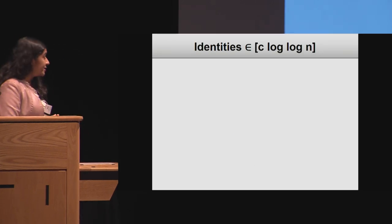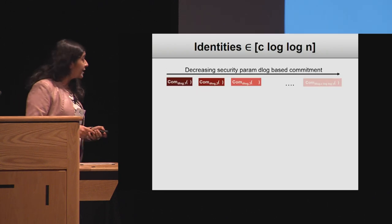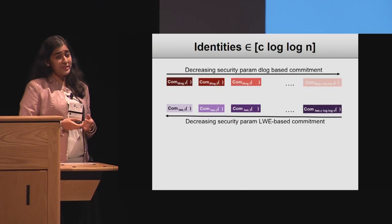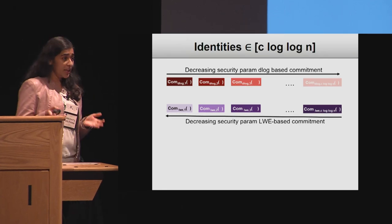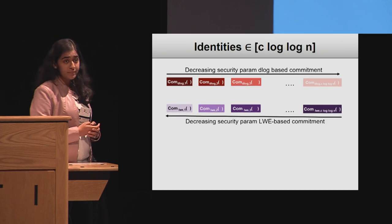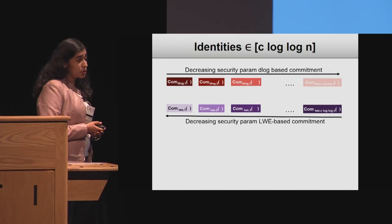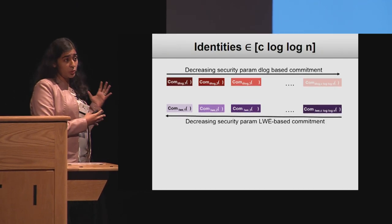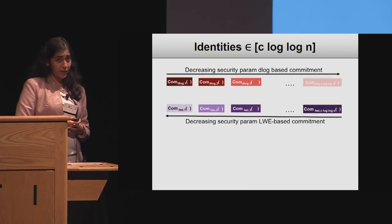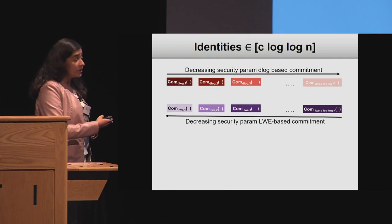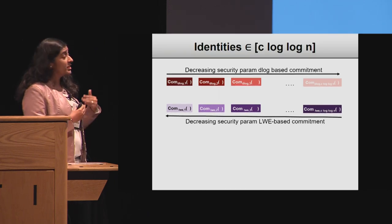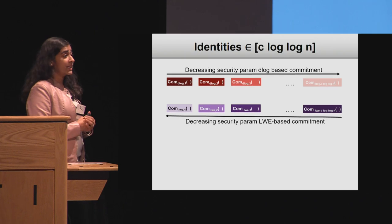To do this, we arrange the two sequences of commitments in decreasing order of security, so that all the quantum-secure commitments — the LWE-based commitments — will be less secure than all of the discrete-log-based commitments in the classical world. We set security parameters so that they decrease in this direction.